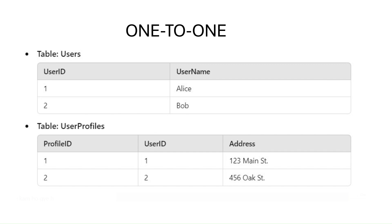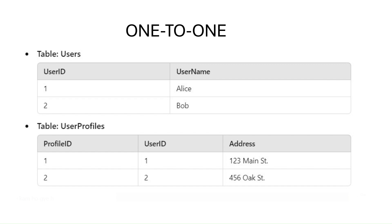If we want to store users and their profiles in the database, we need exactly one profile per user. The user ID in the profiles table serves as a foreign key that relates back to the users table, ensuring each user has exactly one profile — a strict one-to-one relationship. Users is your left table and user profiles is your right table: one user can only have one profile, and one profile can only belong to exactly one user.